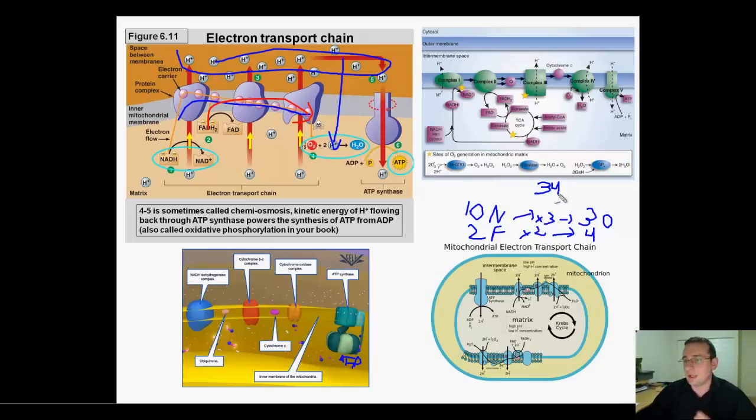By using the two NADHs produced during glycolysis, the four NADHs produced during grooming, and the six NADHs produced during the Krebs cycle for a total of 10, plus the two FADH2s produced during the Krebs cycle, you now make 34 ATPs for a total of 36 when you add the two produced during the Krebs cycle.